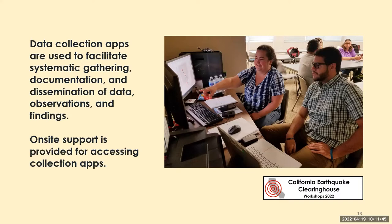In 1994 during the Northridge earthquake, the clearinghouse was still using paper forms — people were given paper sheets to fill out when they came to collect data. We've come a long way since then; digital data has been extremely helpful and quick to share.